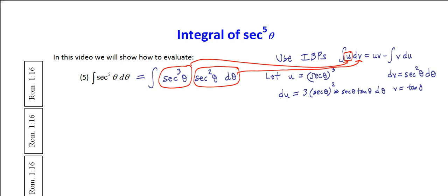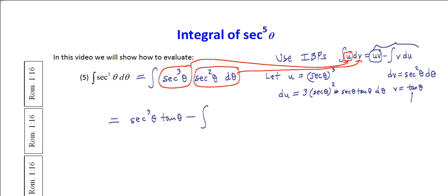Now we plug into the right-hand side. We get u times v, which is the product of secant cubed theta times tangent of theta — that's the first term — minus the integral of v times du. So v is tangent, and we have 3 secant squared theta times secant, giving secant cubed theta times tangent of theta d theta as the du portion.